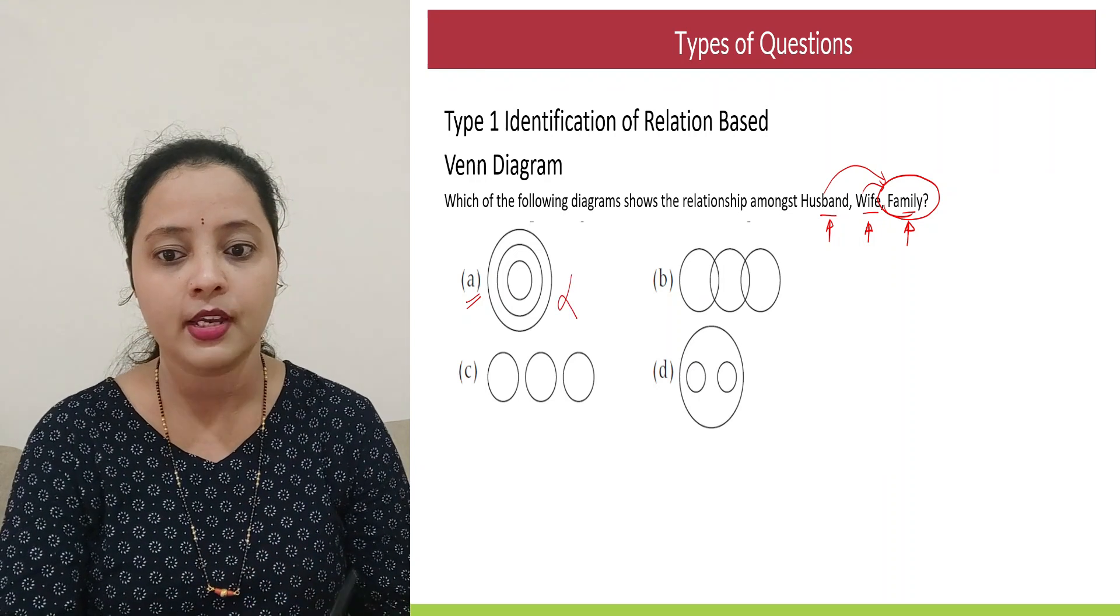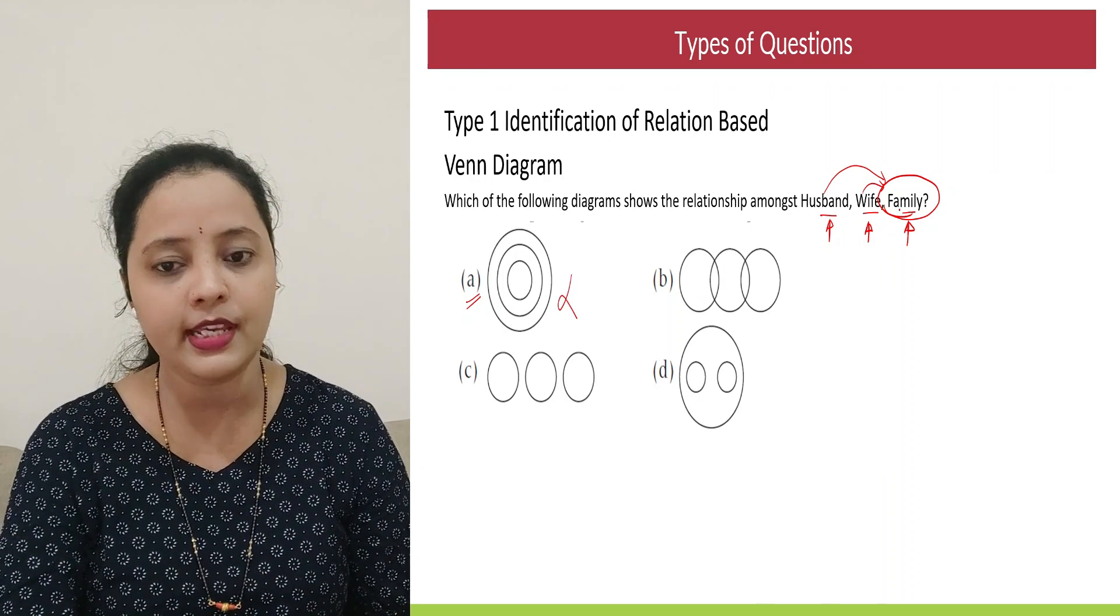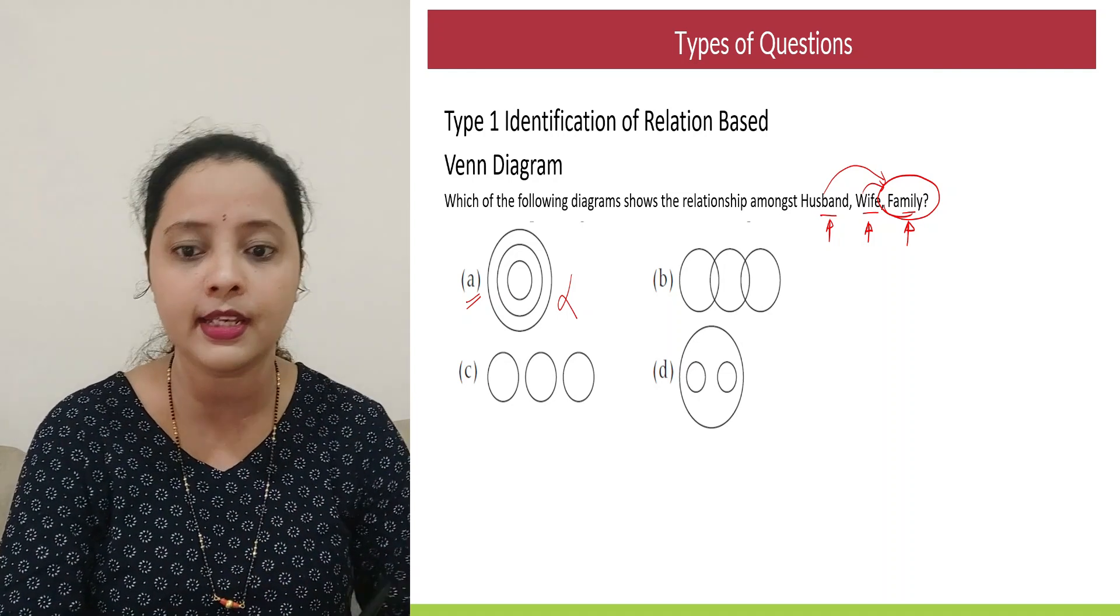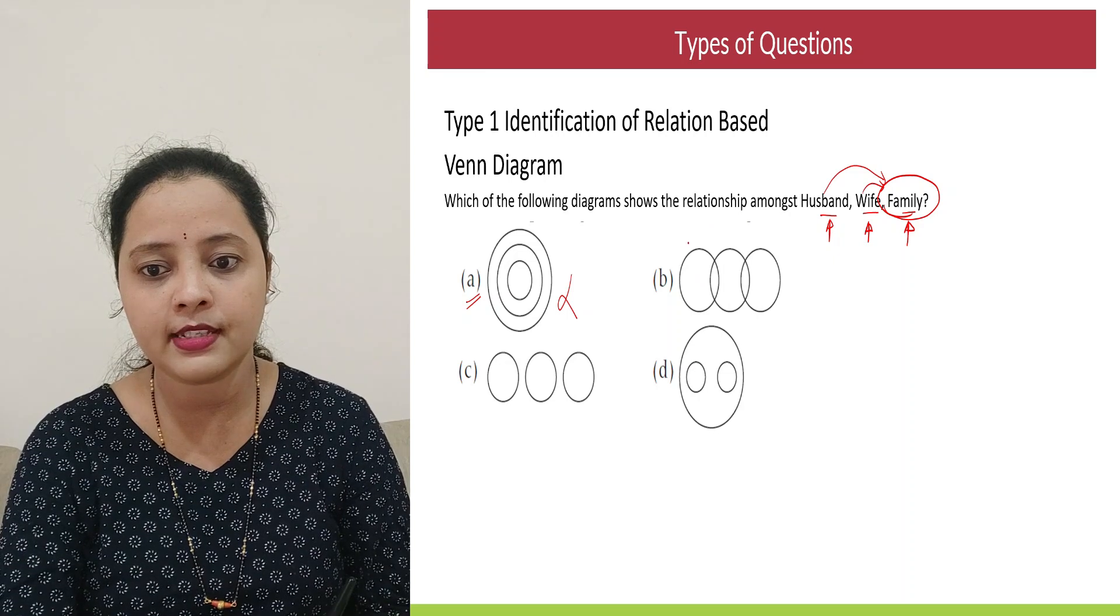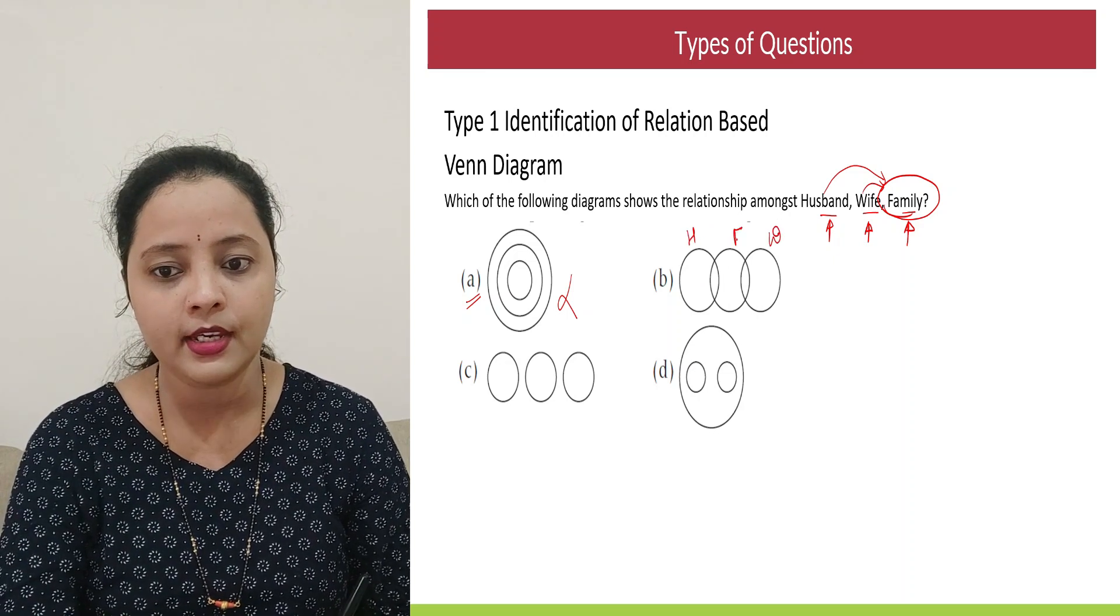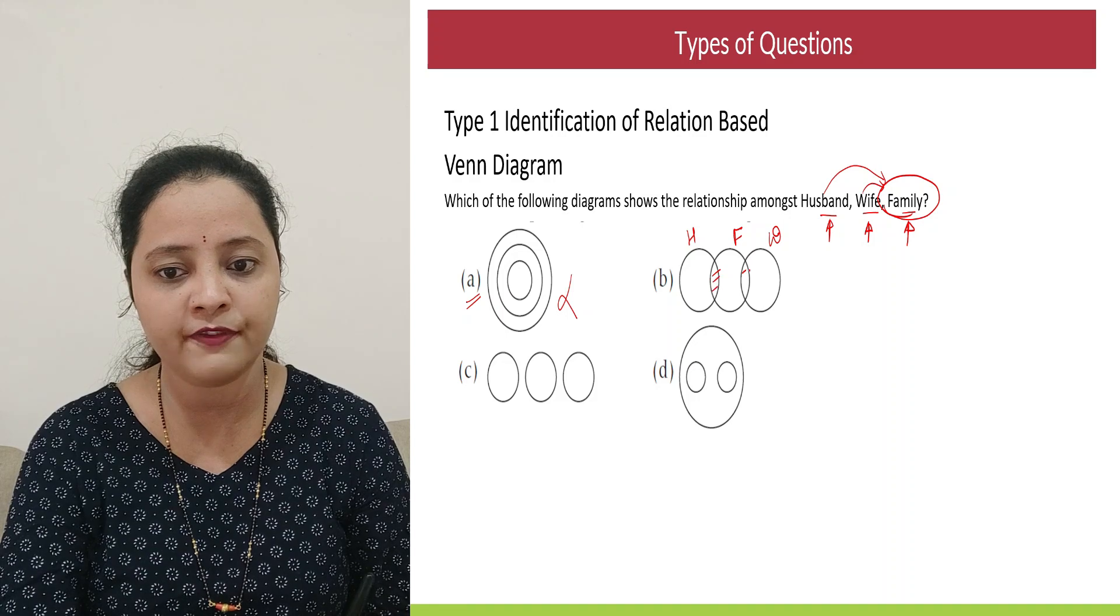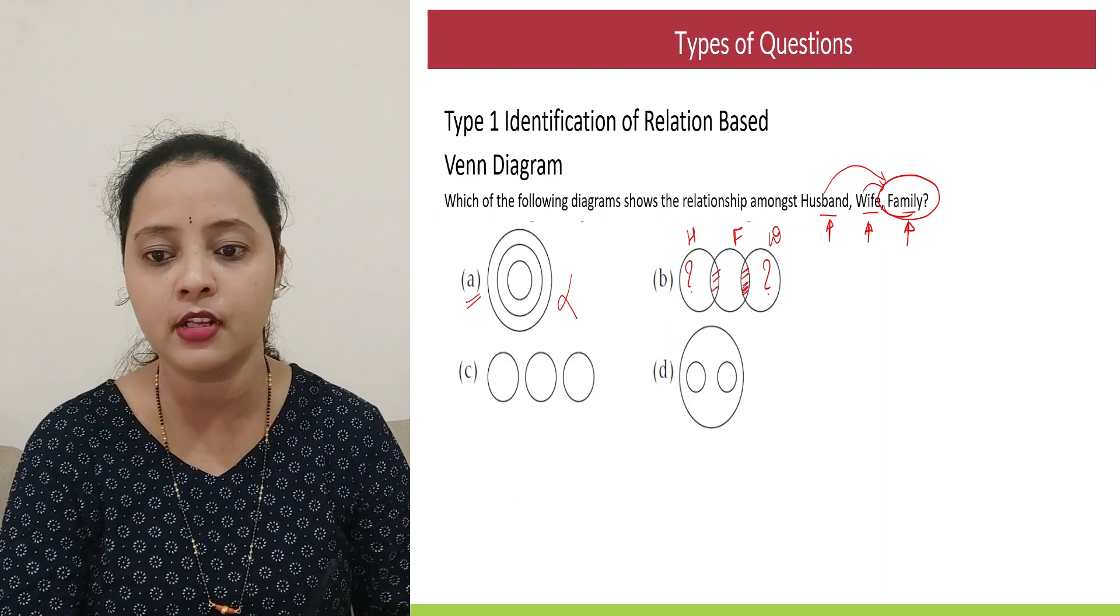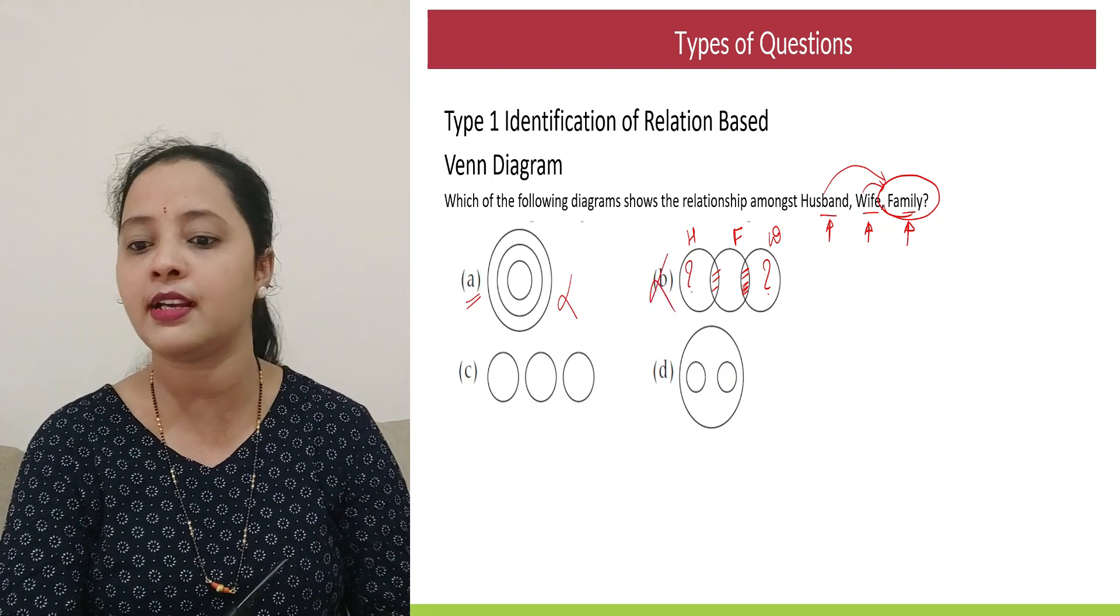I go to option B. Now what I see? Family. I have husband and wife. Now can there be a husband or a wife without a family? If this is husband and if this is wife and if this is family, this part of husband and this part of wife would become the family. But what about the remaining section? It's nowhere, right? And that's impossible. So option B also cannot be my answer.